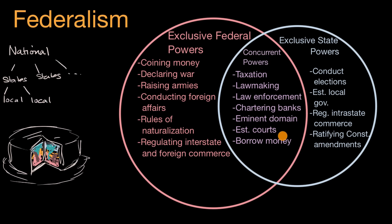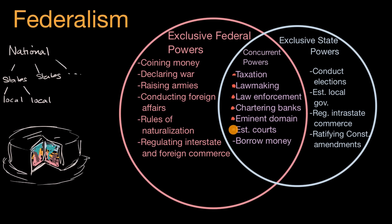In the middle of the Venn diagram are concurrent powers, common to both federal and state governments. You can have federal taxes and state taxes — most of us have both. There are federal laws and state laws. Similarly, there's federal law enforcement like the FBI, and state and local police. The chartering of banks, eminent domain — where a government can take land for the broader public good and compensate those affected — establishing courts, and borrowing money through bonds are all concurrent powers shared by federal and state governments.